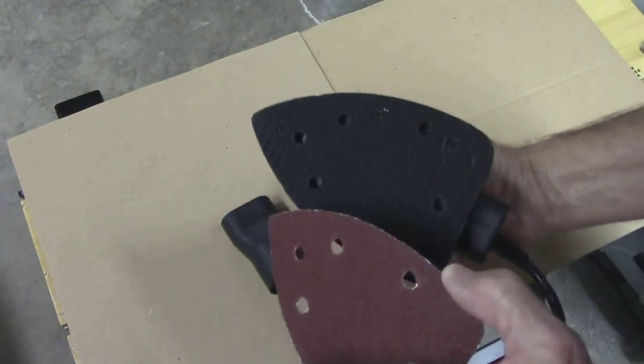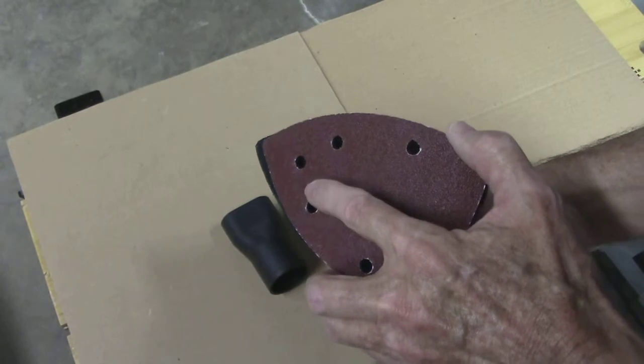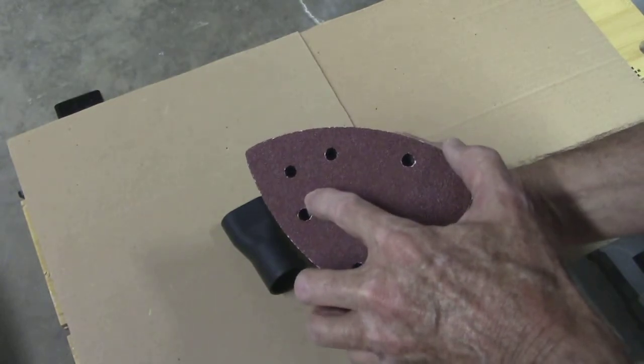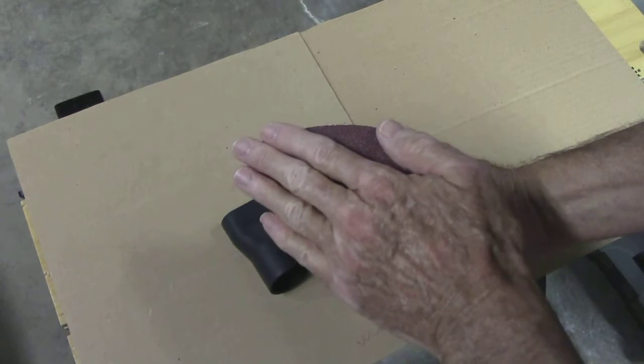Sandpaper is easily installed using the hook and loop or Velcro system. It stays firmly attached during sanding.